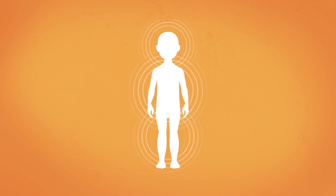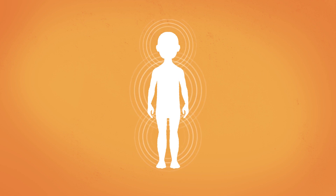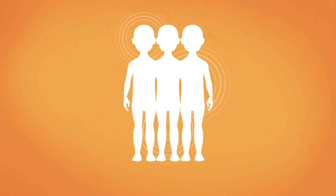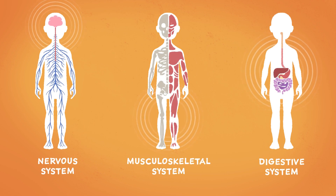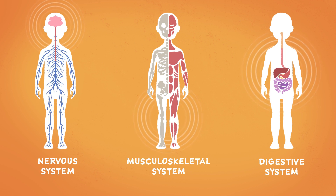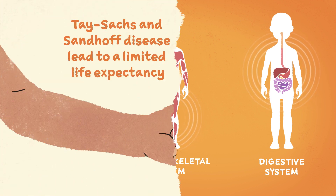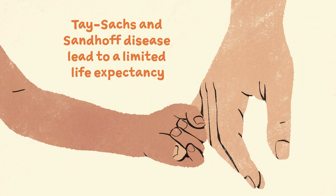Tay-Sachs and Sandhoff disease are progressive and multi-system conditions. This means that in time, more parts of the body and bodily functions will be affected and the person will need more assistance. Unfortunately, these conditions also lead to a limited life expectancy.